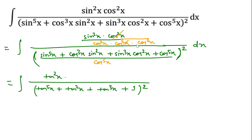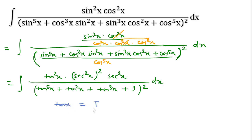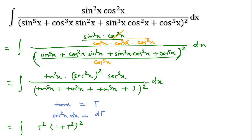This cos⁶x — 1 over cos⁶x means sec⁶x — and we can also write sec⁶x as sec²x to the power 3, which becomes sec⁶x. If we consider tan x equal to t and differentiate, then we can write sec²x dx equal to dt. So we can write t² times 1 plus tan²x, which means 1 plus t² squared, and in place of sec²x dx we write dt.